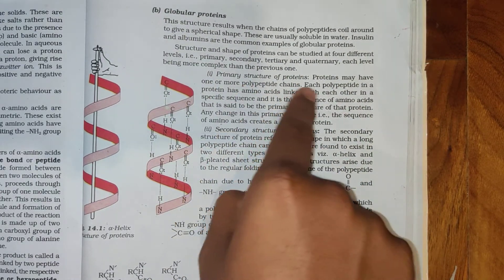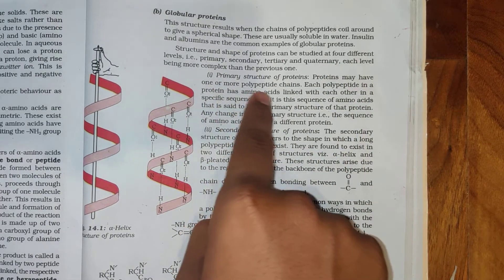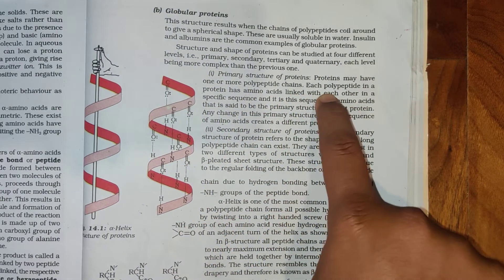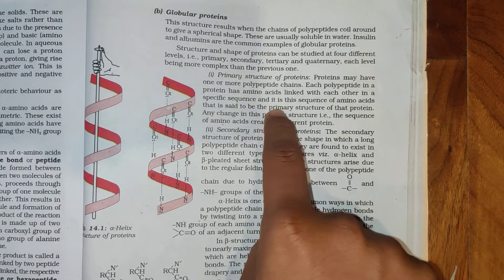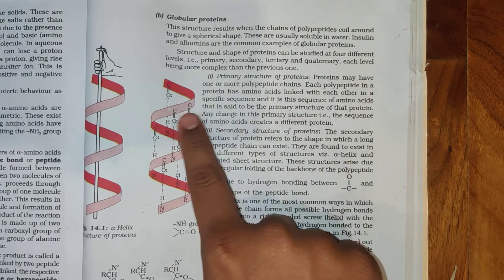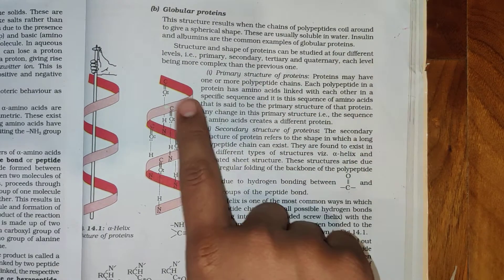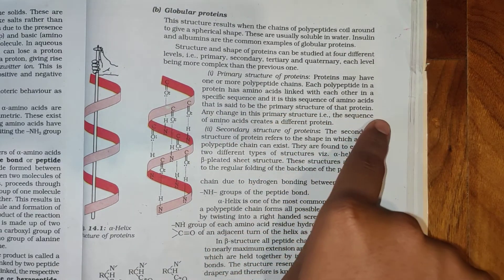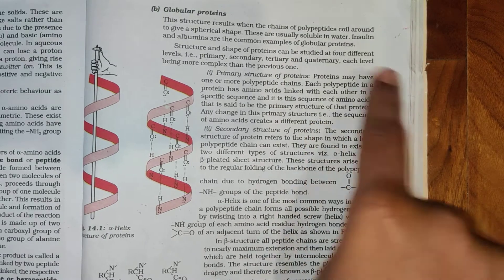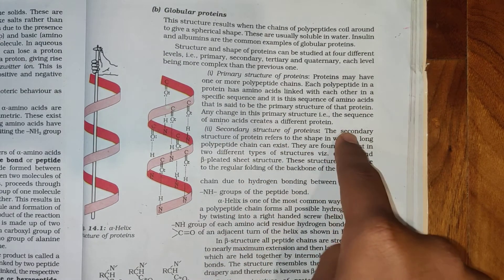Primary structure of proteins: Proteins may have one or more polypeptide chains. Each polypeptide in a protein has amino acids linked with each other in a specific sequence and it is this sequence of amino acids that is said to be primary structure of that protein. Any change in this primary structure, the sequence of amino acids creates a different protein.